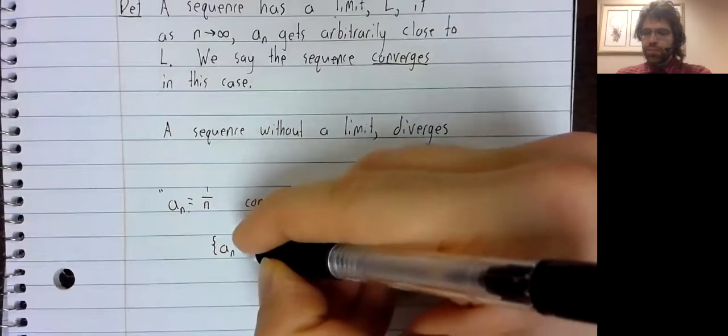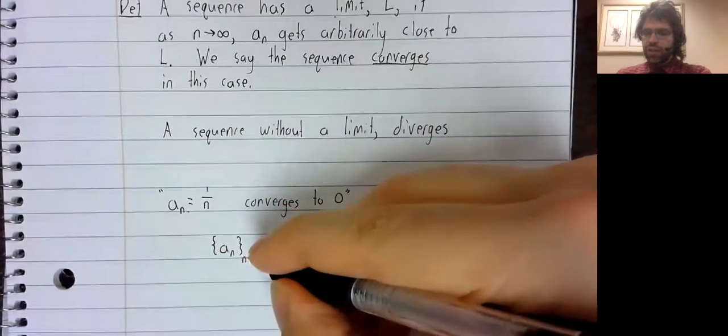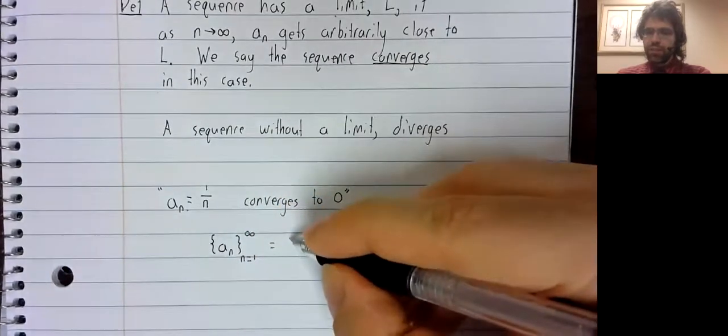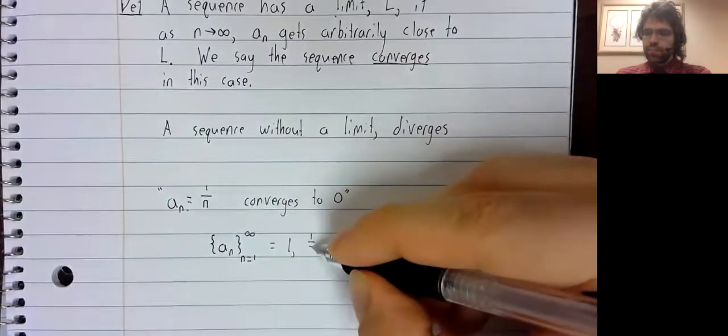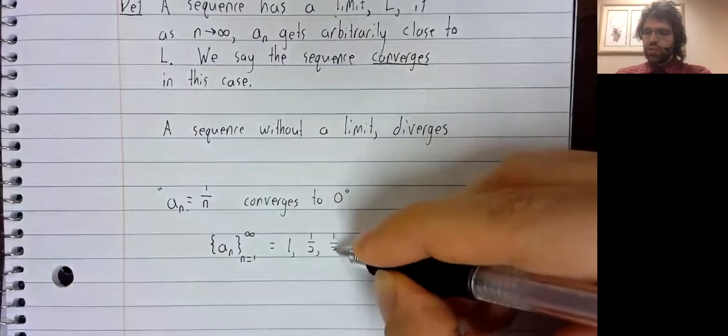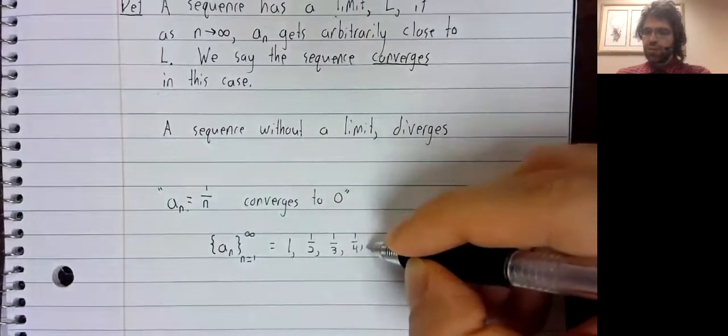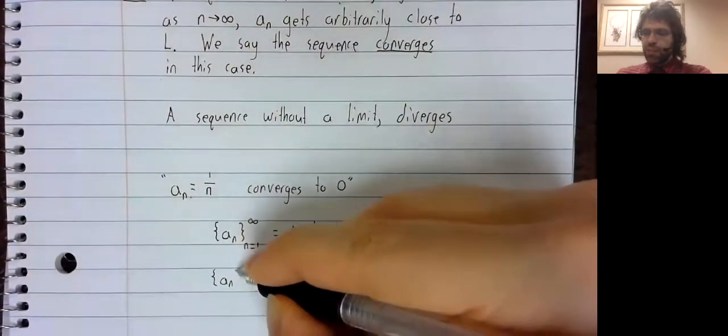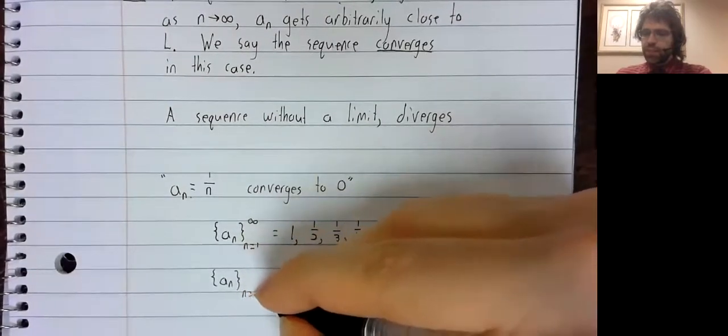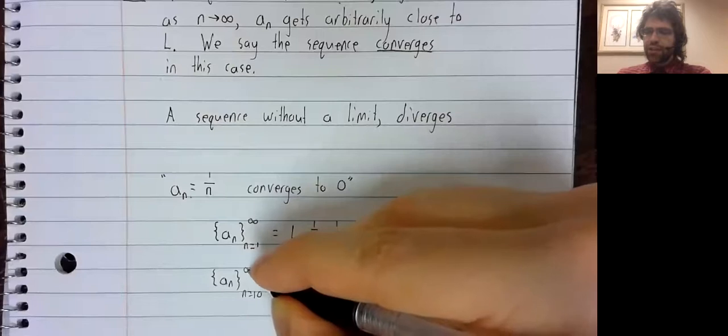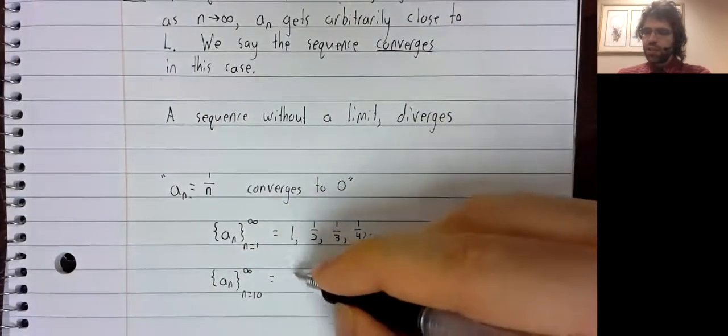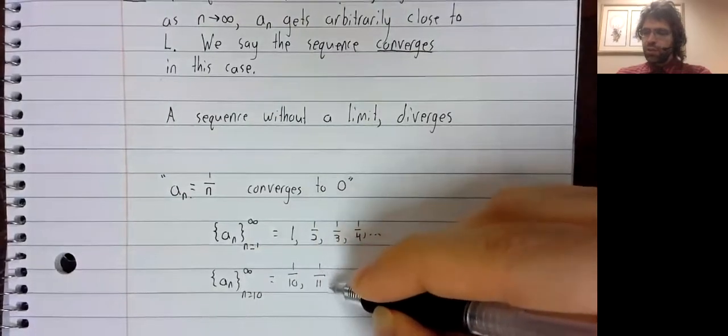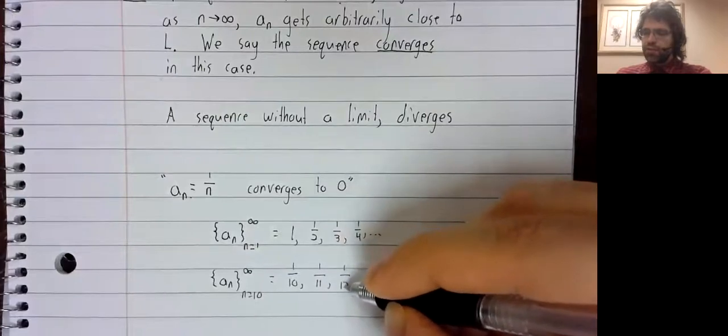But a sub n, where n goes from one to infinity, gives you this sequence.